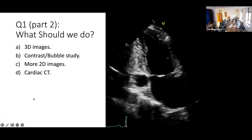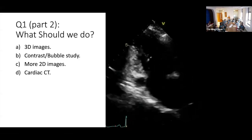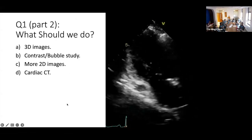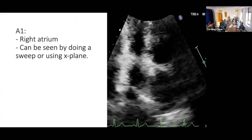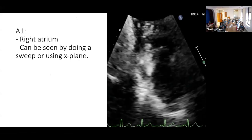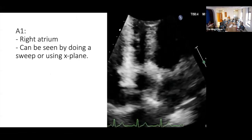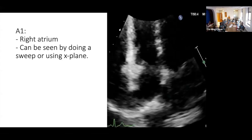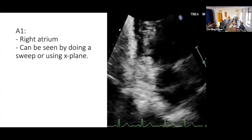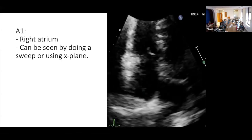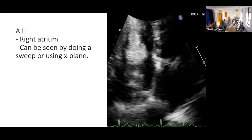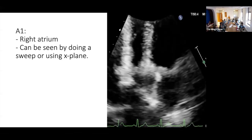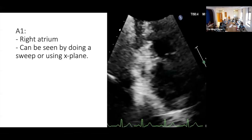She took the probe and did a sweep from the apical 4-chamber all the way to the apical 2-chamber. It turned out to be just the dilated right atrium sitting there, because it is not the usual place for the coronary sinus. The coronary artery would not be this large and compressible. You can also use an X-plane and show it at 90 degrees. I remember one of my seniors used to say: you should be proud of your modality. You should not send the patient for another modality unless you did your best with what you have.